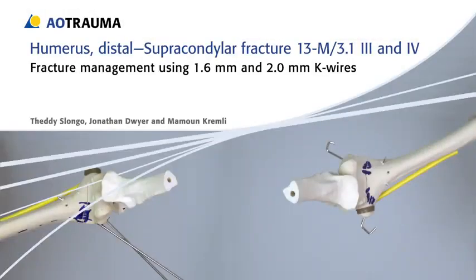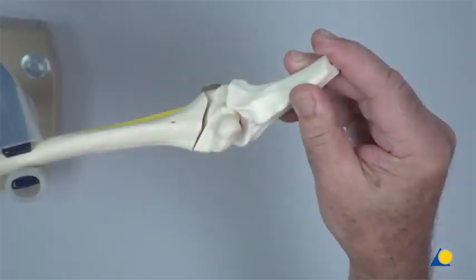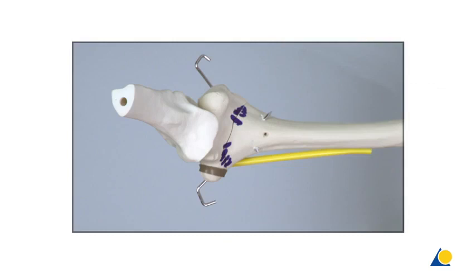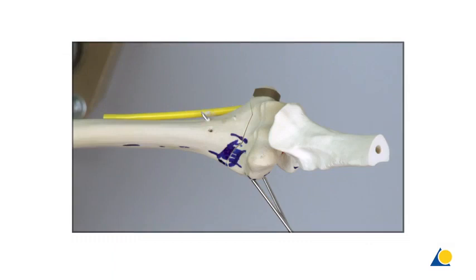Humerus distal supracondylar fracture, AO classification 1-3-M-3-1, 3 and 4. Fracture management using 1.6 mm and 2.0 mm K-wires. In this presentation, K-wires will be used to demonstrate two fixation techniques for an oblique supracondylar fracture of the distal humerus: the crossed bilateral 1.6 mm K-wire fixation technique and the divergent radial 2.0 mm K-wire technique.